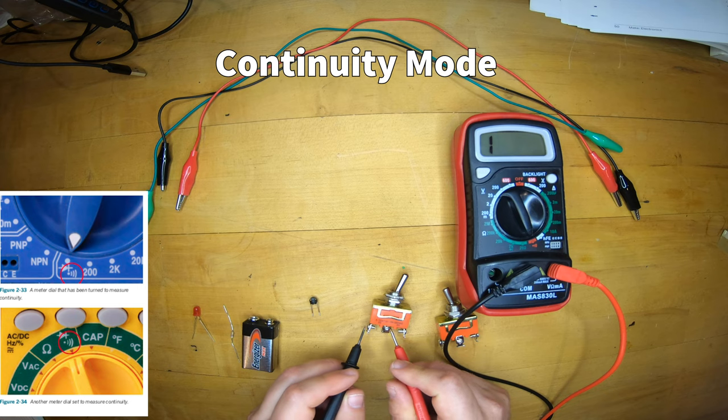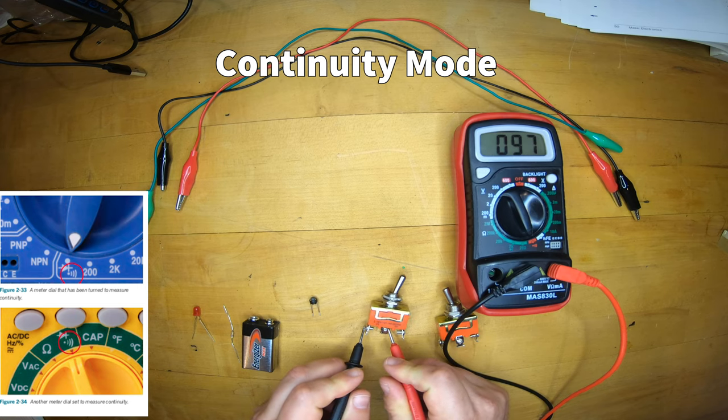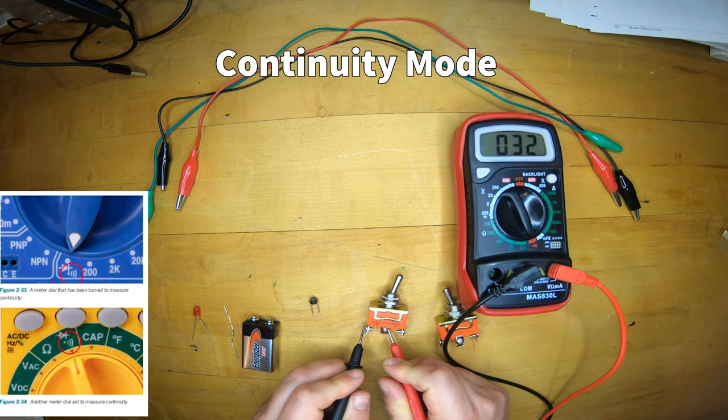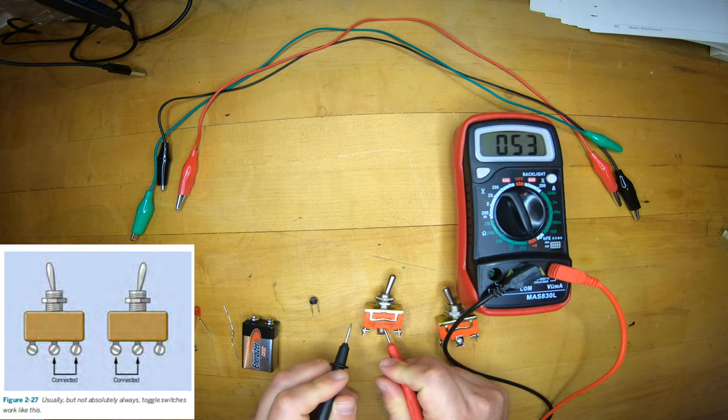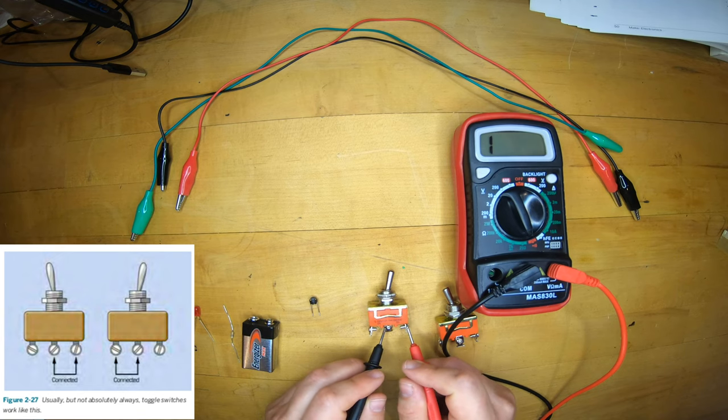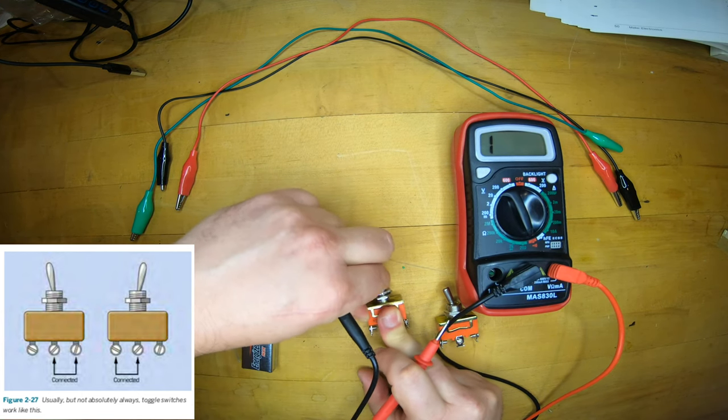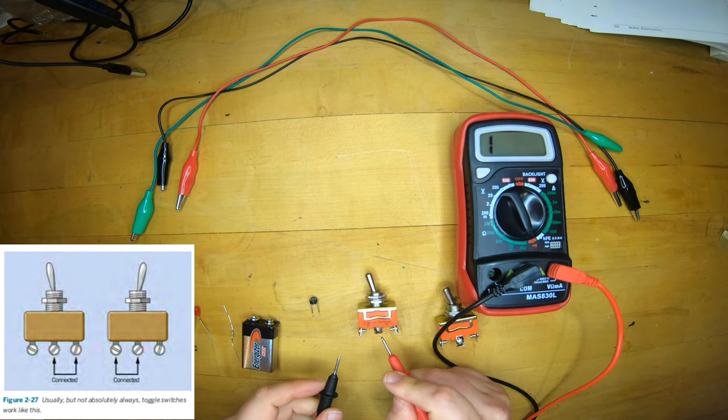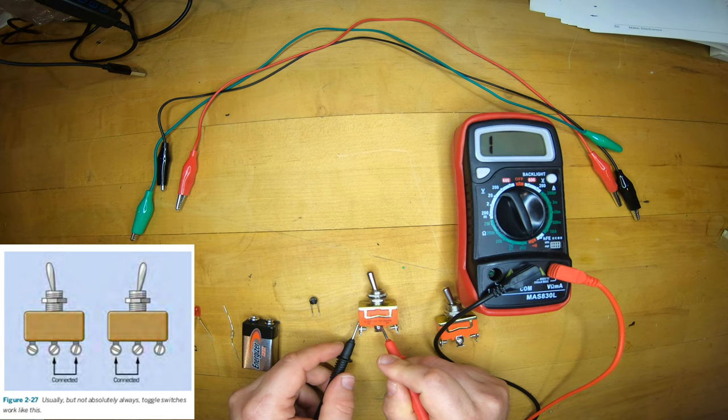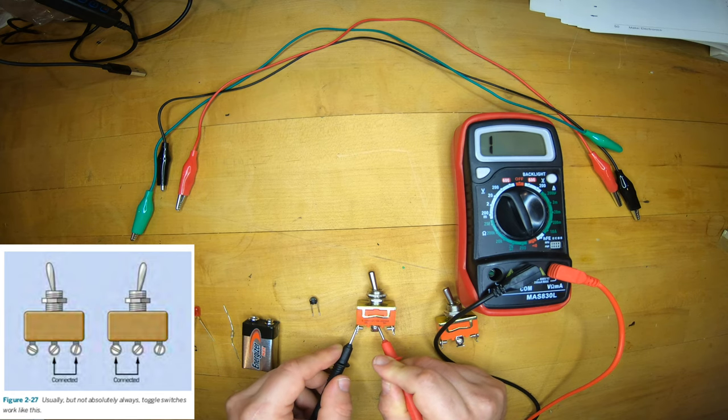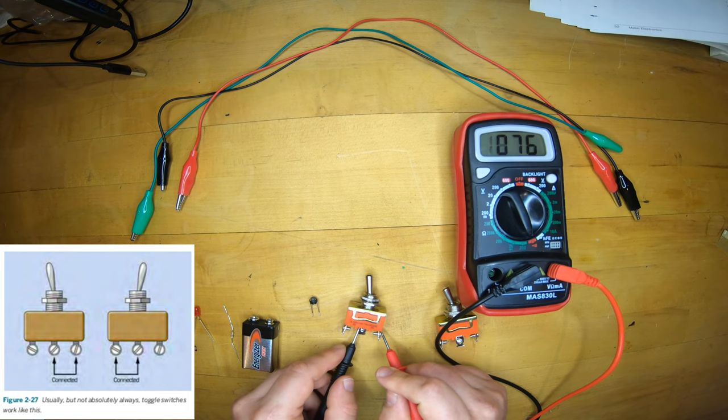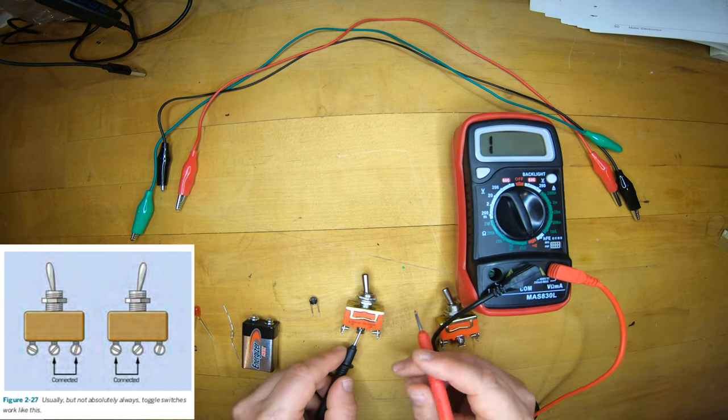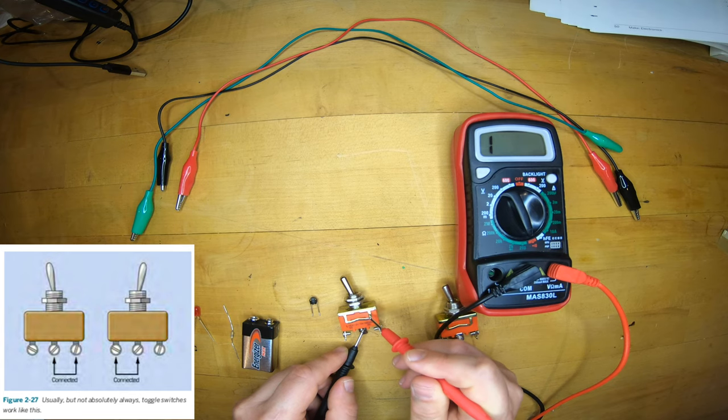Let's use the continuity mode to investigate how our toggle switches work. No signal here. I have an overload. And there's that happy beep telling me I have continuity. So in my case, my toggle switches point away from the pins where I have continuity. So I'm always measuring from the center to one of the edge pins. And again, the toggle switch points away from the side which is connected. Continuity is really convenient, as we'll see, for going around and checking connections in a circuit.